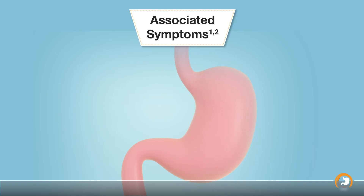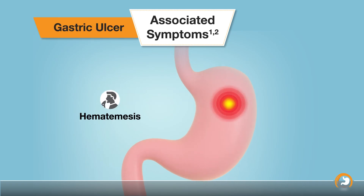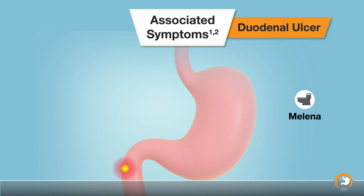Associated symptoms like hematemesis are more common in patients with gastric ulcers, whereas melena is a common occurrence in duodenal ulcers.